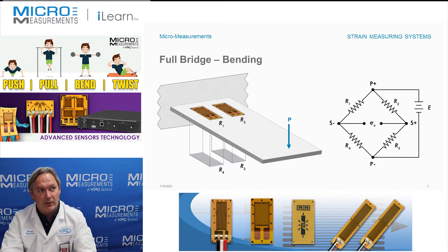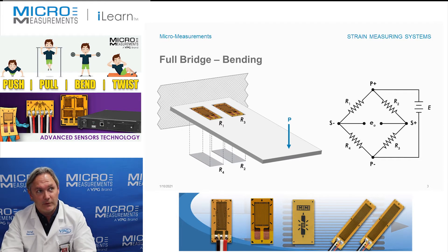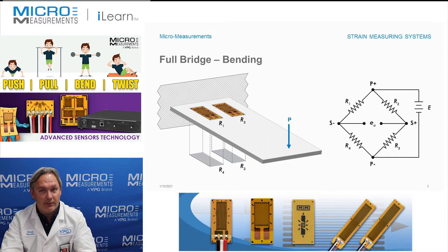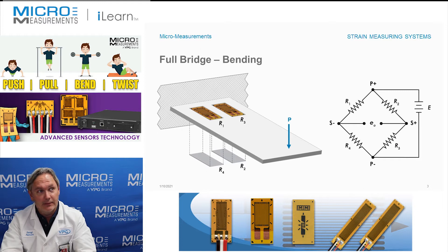If you look closely you'll see that we've got a cantilevered beam where it's fixed on the left-hand side and a load or force is applied to the right-hand side, given as P. We've got four strain gauges installed on this cantilevered beam back closer to the fixed end.